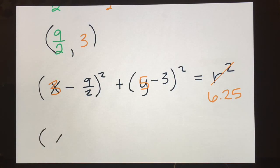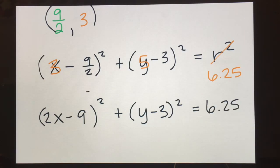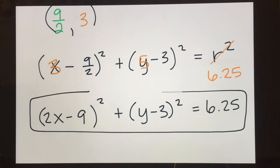And so now I can go ahead and write my equation out. So x minus 9 halves. Technically we wouldn't really write it as 9 halves quite like that. We would actually want to make this a little bit more proper. I'm going to put the 9 right here, bring the 2 to the front. 2x minus 9 squared plus y minus 3 squared equals 6.25. And there is the equation of my circle.